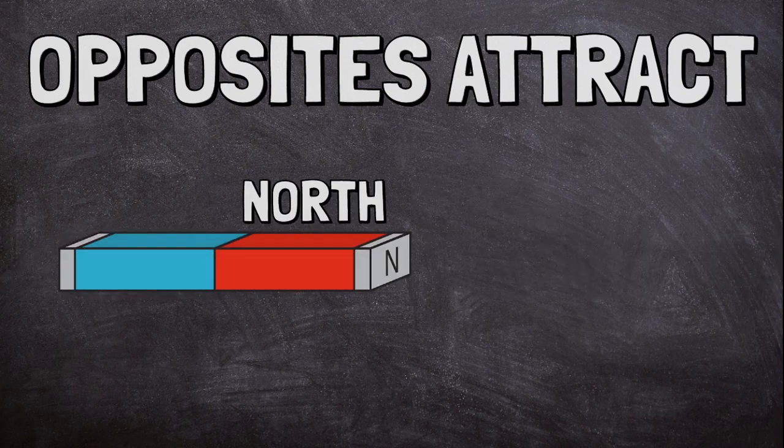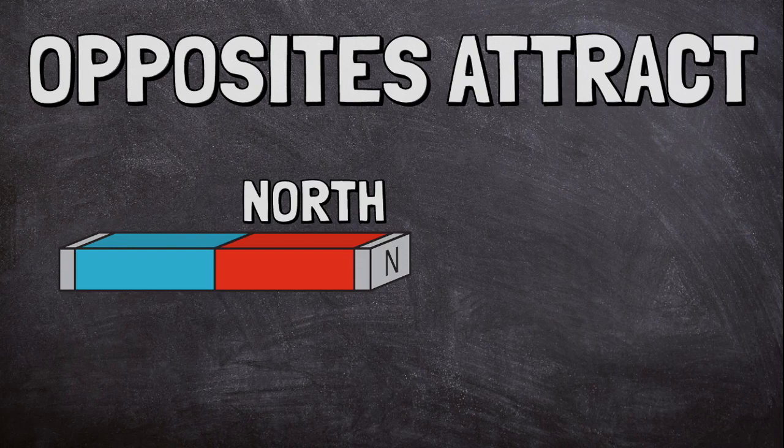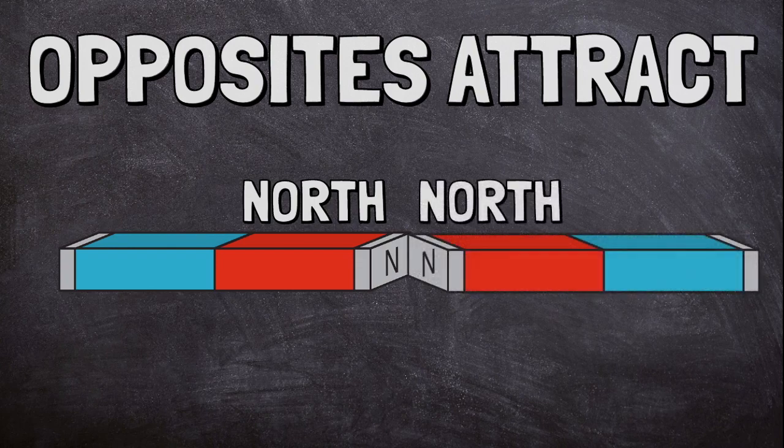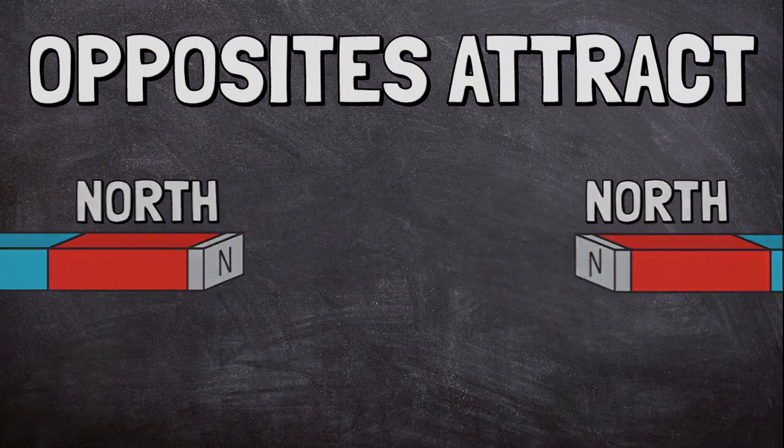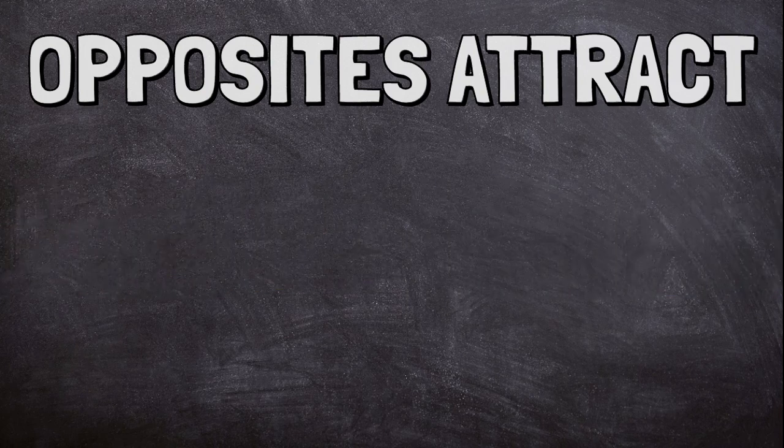Magnets can also repel or push away from one another. Place the north pole of one magnet next to the north pole of another and watch as they push each other away as if by magic.